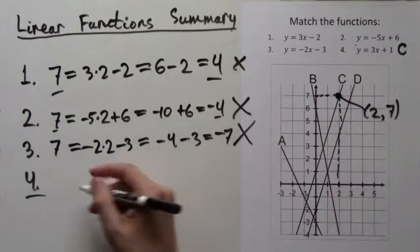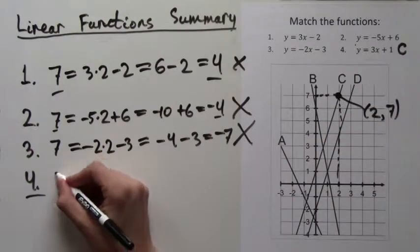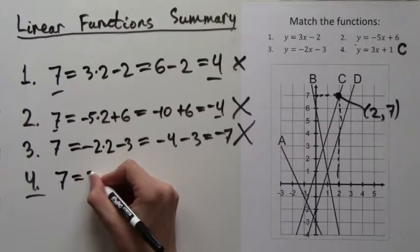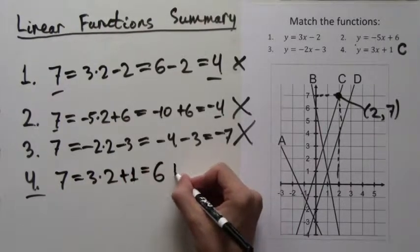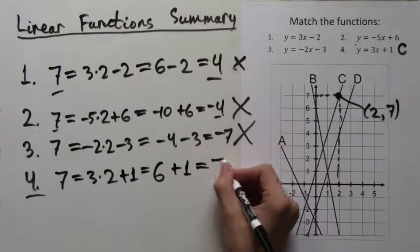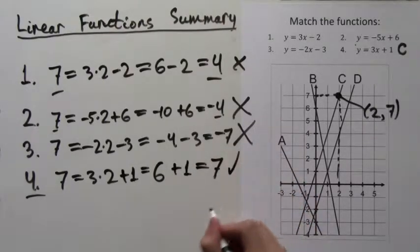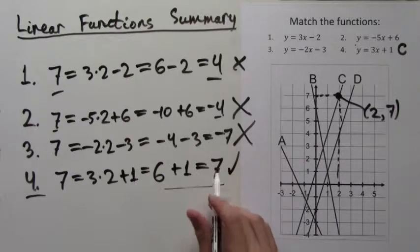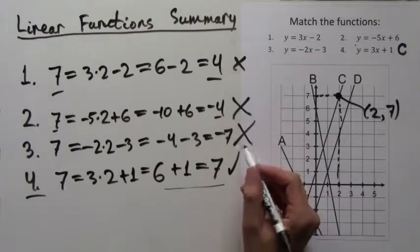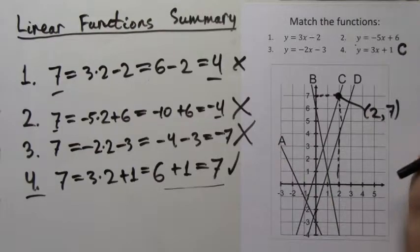But we can just make sure that everything works out in the formula. If we plug in y equals 7 and x equals 2, we get 7 equals 3 times 2 plus 1, which is 6 plus 1, which is 7. This is true. So we know for sure now that C is the graph of the formula number 4.